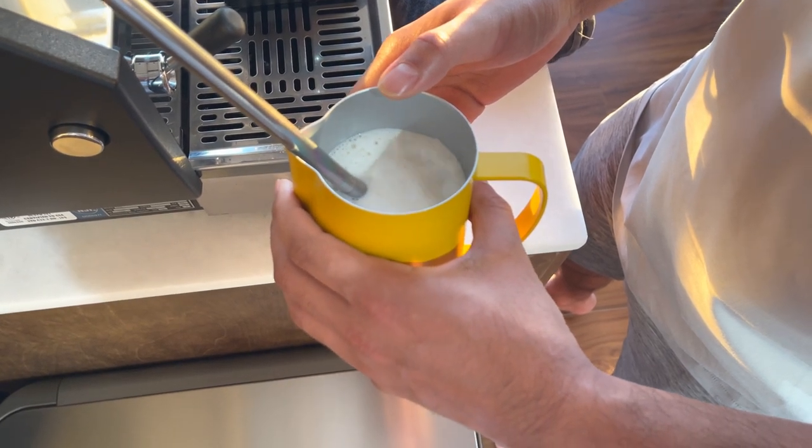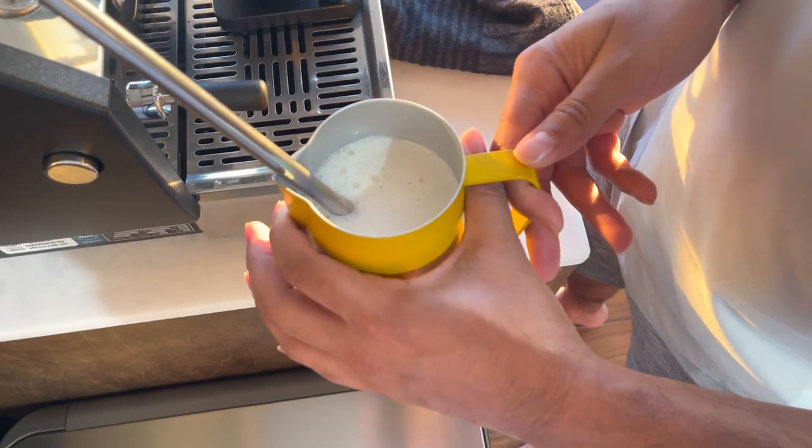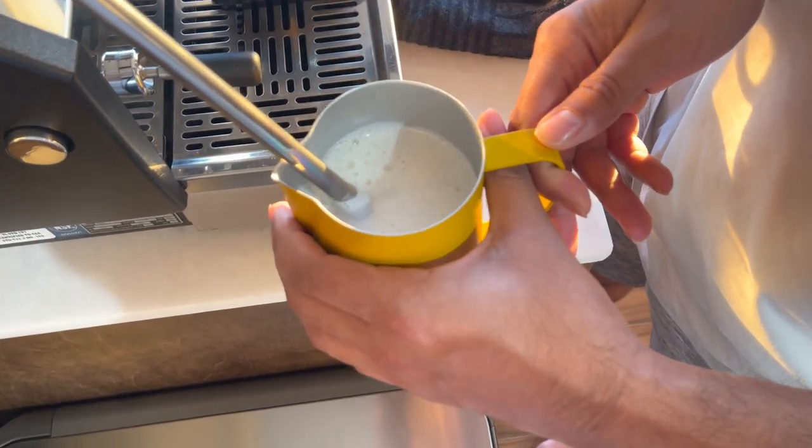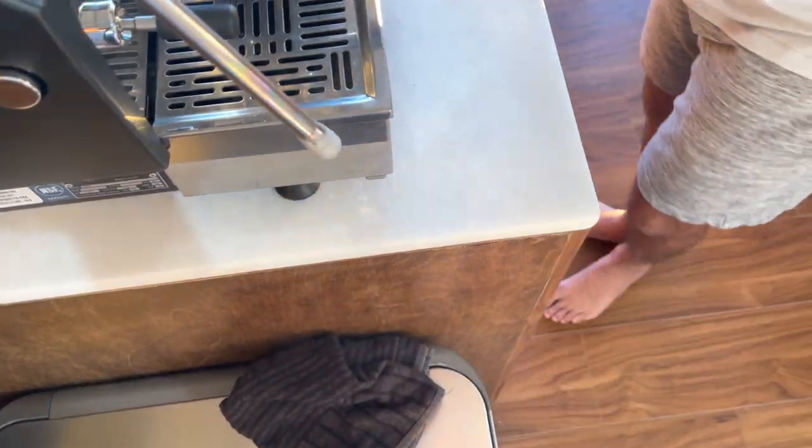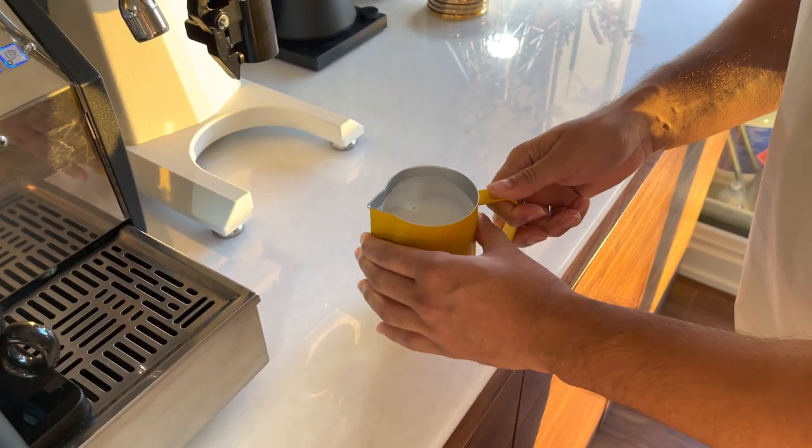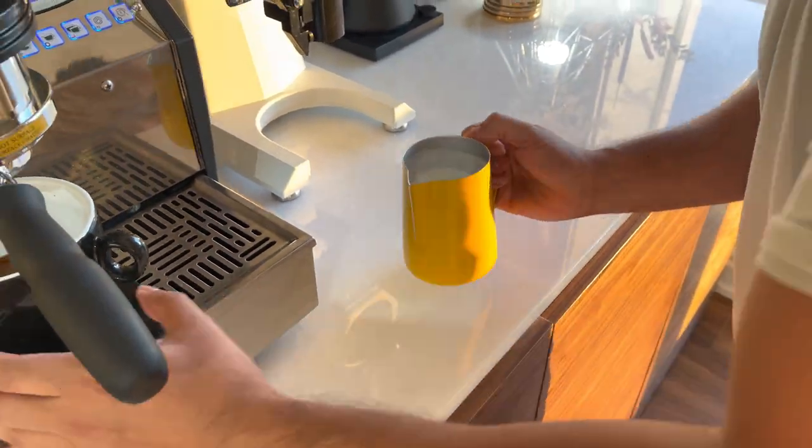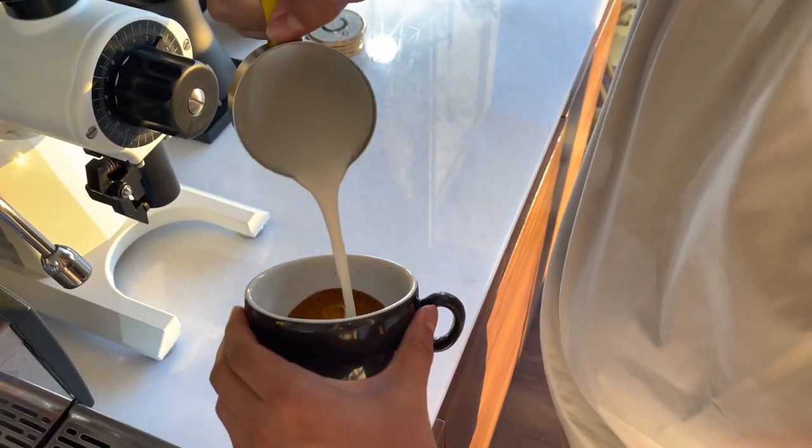Might have too much milk. So you just want to do it until the pitcher is hot to touch or you can barely hold it. So I think that's pretty good, and I will clean that up after, don't worry. And you want to just hit it down a little, get rid of the big bubbles. I think I have too much milk here, which is fine. And you're just going to pour this in.